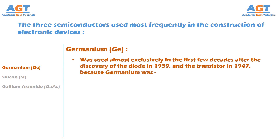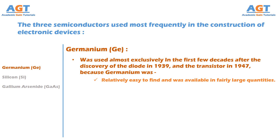Germanium was used almost exclusively in the first few decades after the discovery of a diode in 1939 and the discovery of the transistor in 1947, because germanium was relatively easy to find and was available in fairly large quantities. It was also relatively easy to refine germanium to obtain very high levels of purity, which is an important aspect in the fabrication process.